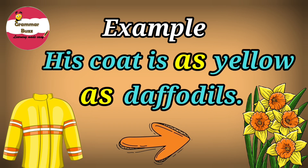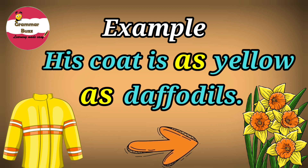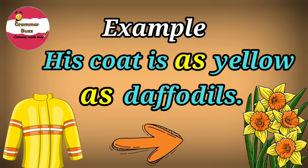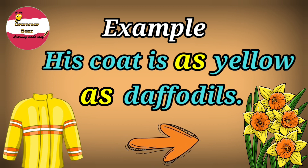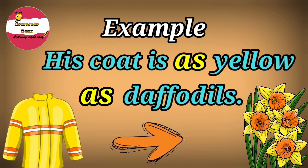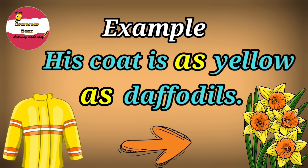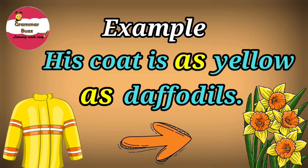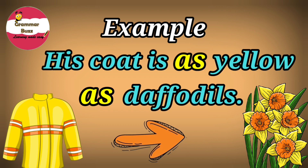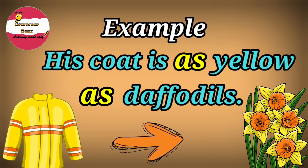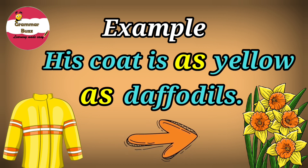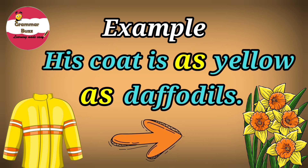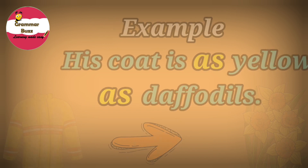Take a look at this simile: 'His coat is as yellow as daffodils.' We know this is a simile because it is a comparison using the word 'as.' The yellow coat is compared to the yellow daffodils. What do the coat and the daffodils have in common? Both of them are yellow in color — the coat is yellow like the daffodils, and that is a simile.